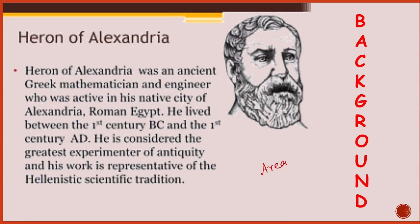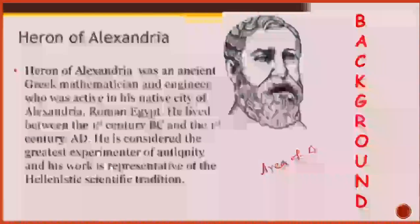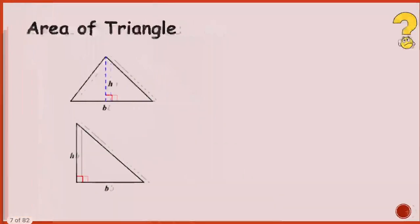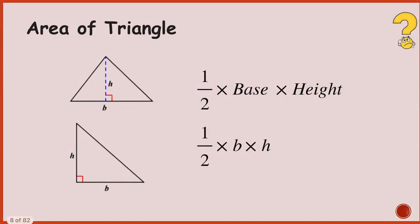Let's quickly revise the area of a triangle. Everyone knows that the formula is: area = half times base times height. The important thing is identifying what is the base and what is the height. Let's say we have triangle ABC with point D. Always first identify the height — the 90-degree line is the height.